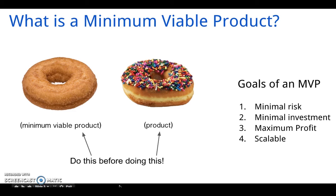So what exactly is a minimum viable product? To illustrate, let's look at the example of these two donuts. The donut on the left is your basic plain donut — it's just deep-fried dough. The one on the right has some cream inside as well as some sprinkles. If I'm running an MVP business using the MVP model, my goal is to minimize risk and capital investment for the highest possible rate of return. Also, the product and the business has to be scalable.